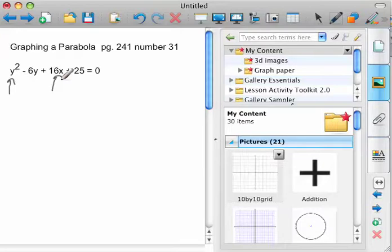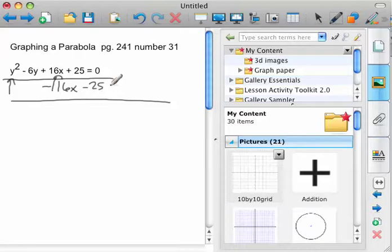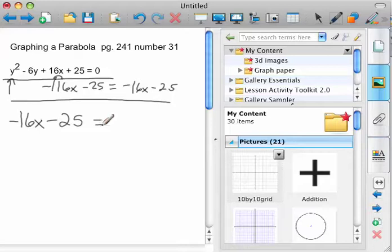So what I'm going to do is I'm going to move the 16x and the 25 over. So I'm going to subtract 16x and subtract 25 from both sides of the equation. You'd have negative 16x minus 25. So now you've got, and then I'm going to use the symmetry property to flip it across the equal sign. So negative 16x minus 25 equals y squared minus 6y.